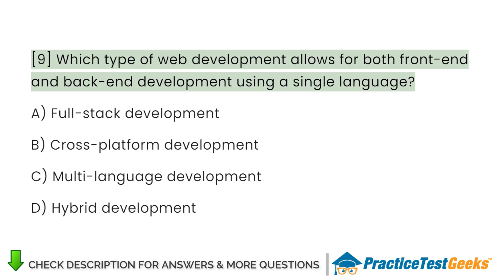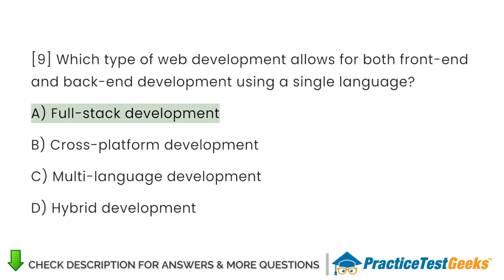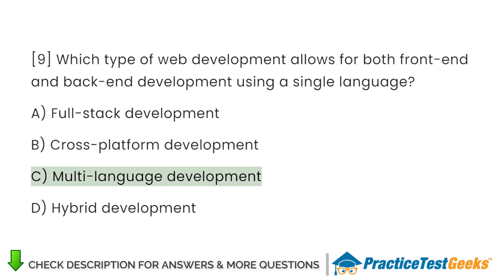Which type of web development allows for both front-end and back-end development using a single language? A. Full-stack development. B. Cross-platform development. C. Multi-language development. D. Hybrid development.